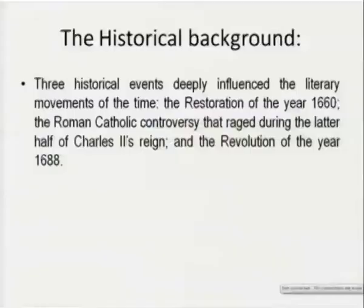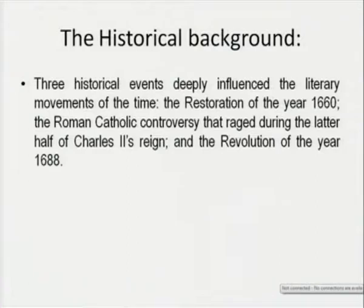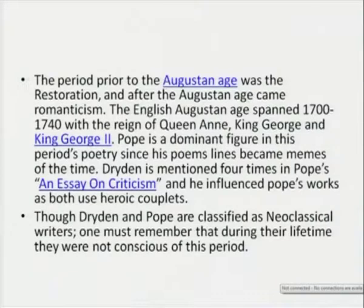We have to go back to the historical background. Three historical events deeply influenced the literary movements of the time: the restoration of 1660, which was the restoration of the monarchy just after Cromwell's government fell; the Roman Catholic controversy that arose during the latter half of Charles II's reign; and the revolution of 1688. The period prior to the Augustan age was the restoration. Because Dryden also falls in that period, it will be necessary for us to also talk about the restoration while we are talking about the Augustan age. After the Augustan age will come Romanticism. The English Augustan age spans 1700 to 1740, with the reign of Queen Anne, King George, and King George II.